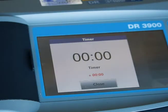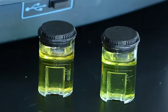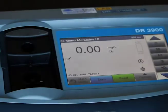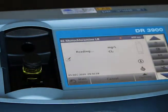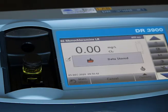When the timer is finished, clean the monochloramine cell and ensure there are no air bubbles present. Insert the cell into the instrument and read. Record your results and leave the monochloramine cell in the instrument.